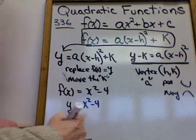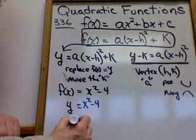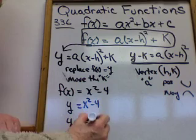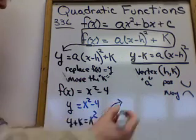Now, the 4 is the k, so move it over. So y plus 4 equals x squared. Now I can do the vertex. What is the vertex of this?